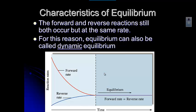Dynamic means it is still changing. This graph shows time on the x-axis and reaction rate on the y-axis. As you start the reaction, the forward rate is really high because the reactants are the only things you've put in, and they're going from reactants to products.